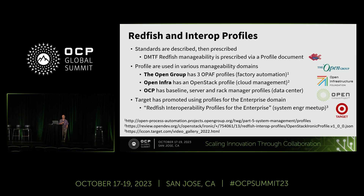Within DMTF, we've created alliance partnerships with other organizations that specialize in other management domains. OCP specializes in data centers — both the edge for cooling and power, and the actual compute. We have a relationship with the Open Group for OPAP, who do process automation — automated factories. They've adopted Redfish about four or five years ago, pushing it into the process automation industry. They have at least three profiles, split to manage hardware and operating systems, and have been very active in utilizing the profile mechanism.